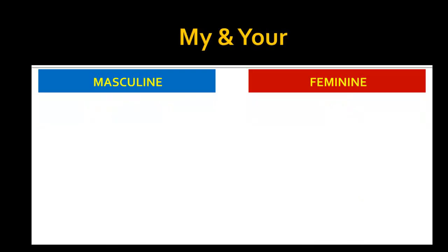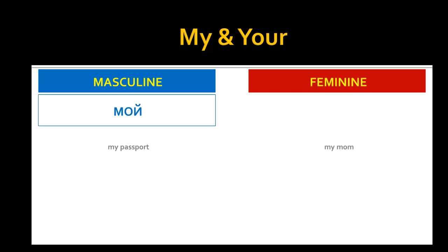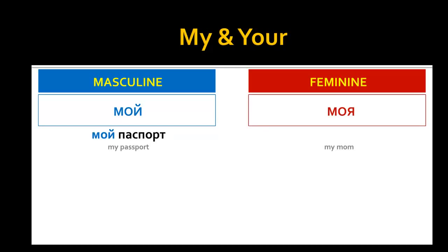It is very important to know the gender of a word because the form of pronouns and adjectives depends on it. For example, you already know that Паспорт is masculine and Мама is feminine. To say 'My passport' you'll need to use the masculine form of Мой. And to say 'My mom' you'll need the feminine form Моя. So you'll have Мой Паспорт and Моя Мама.